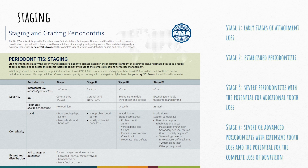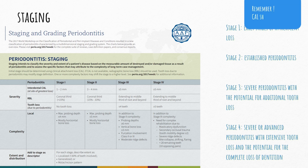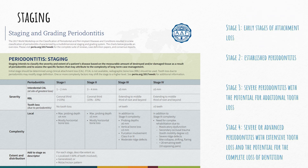Starting with interdental clinical attachment loss: the site with the greatest amount of CAL — the worst affected tooth — will be the tooth that determines the stage. A CAL of 1 to 2 millimeters is stage 1, CAL of 3 millimeters is stage 2, and more than or equal to 5 mm is stage 3 or 4. If CAL was not given in the question, we then refer to radiographic bone loss to reach our diagnosis. Otherwise, CAL should always be our starting point.